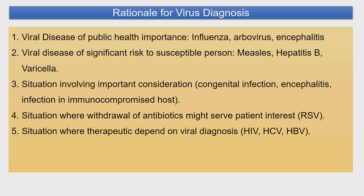Secondly, when there is a significant risk to susceptible persons — many viruses have good vaccines, but not every population is protected. We need to identify unprotected populations, vaccinate them, and if a case arises, restrict the spread by quarantining or treating as soon as possible. The virology lab provides important support in providing proper treatment to cases.